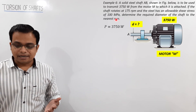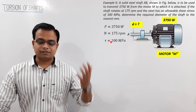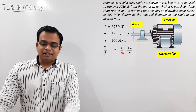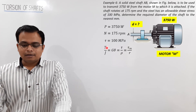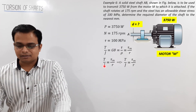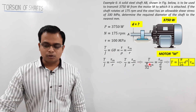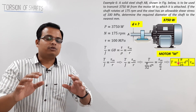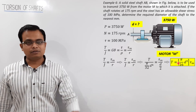From the master equation T/J = τ/ρ, substituting J = π/32·D⁴ and R = D/2, we get T = (π/16)·D³·τ_max. This is a very important formula to memorize. To find D, we need torque, which we calculate from P = 2πNT. Plugging in P = 3750 W and N = 175/60 RPS gives T = 204.63 N·m.